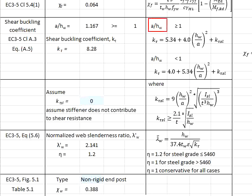And you have to check against the A divided by the height of the web. In this case, the ratio is found to be greater than 1. That means k_tau is obtained from these equations. We conservatively assume k_tau_g is equal to 0, where we assume the stiffener does not contribute any shear resistance of the member. Therefore, k_tau is calculated by using these equations and it will be equal to 8.28.